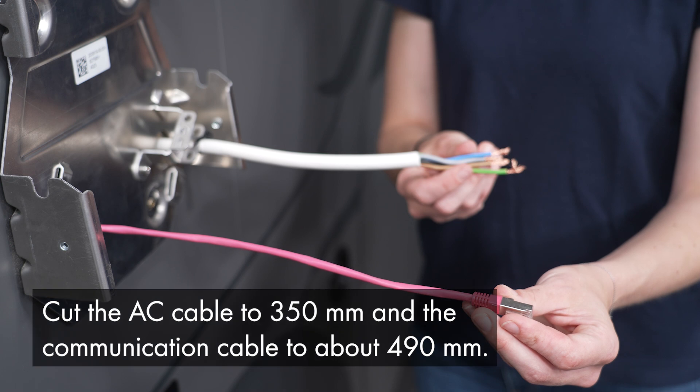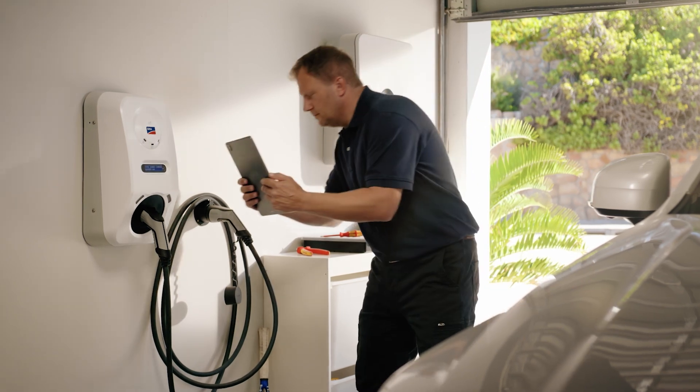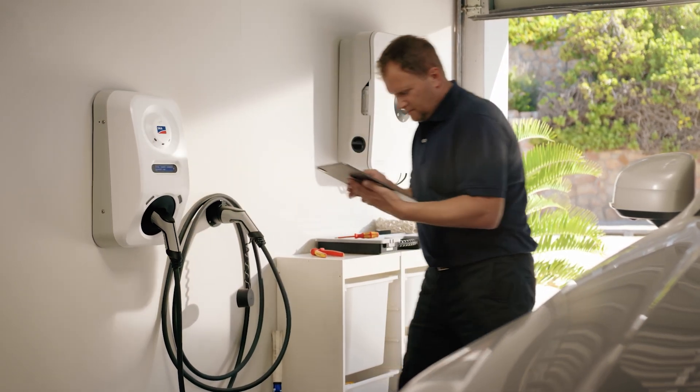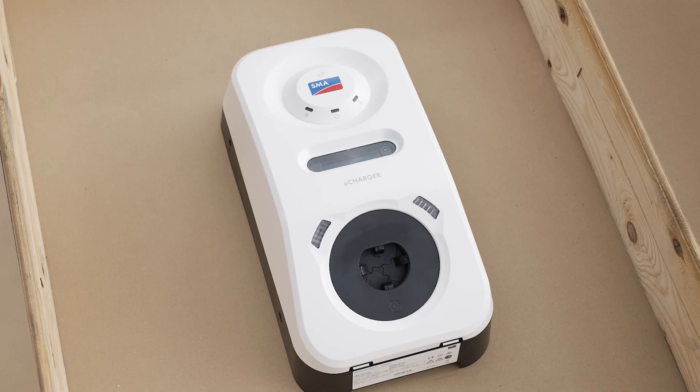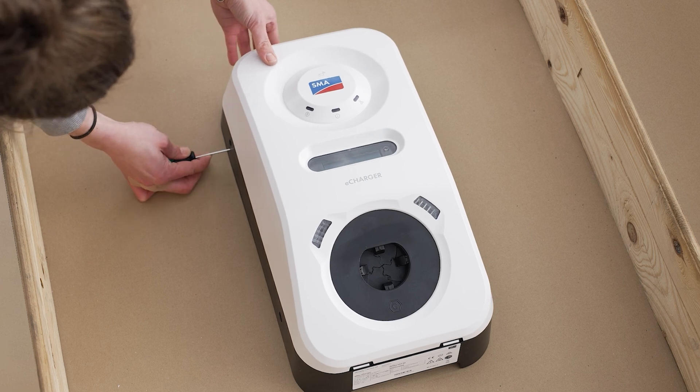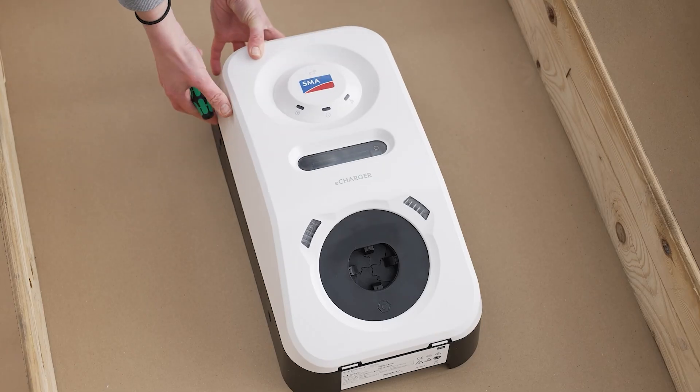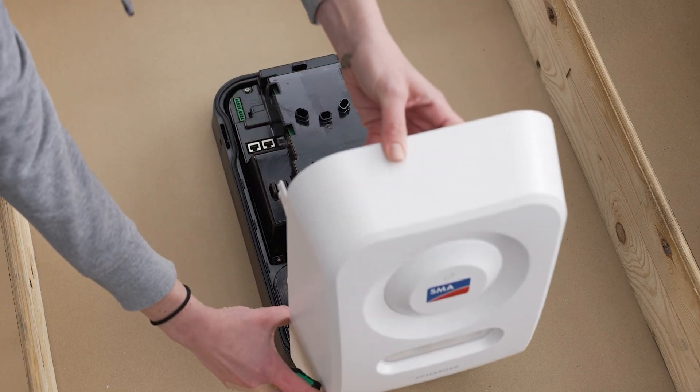Cut the cables to approximately 49 cm at this point. Now it's time to assemble the SMA eCharger itself. To do this, remove the device from the packaging and use a narrow screwdriver to loosen the transport lock on the upper tabs of the cover on the right and left. Remove the cover at an angle of approximately 70 degrees and put it to the side.